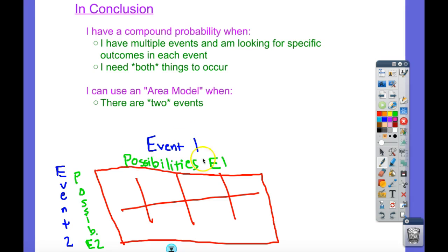So two events, I put event one and all its possibilities on top, event two and all its possibilities on this side, bring down all these possibilities, bring over all these possibilities, and then you have a list of everything that could happen. So you find the ones that you want, put that in as you desired, and then all of the total possible goes on the bottom as your total possible outcomes. That is area model for finding a compound probability.